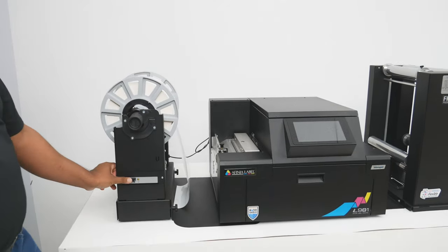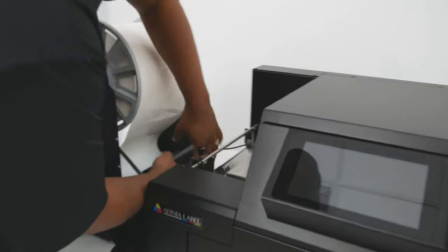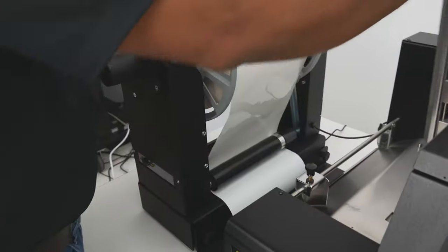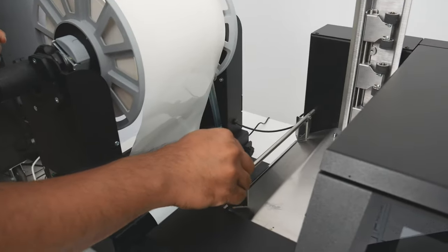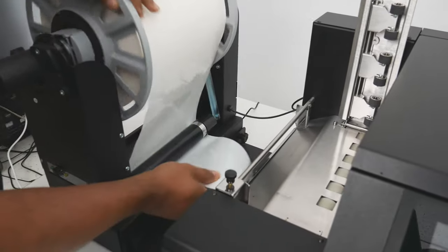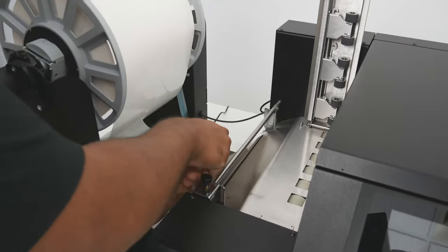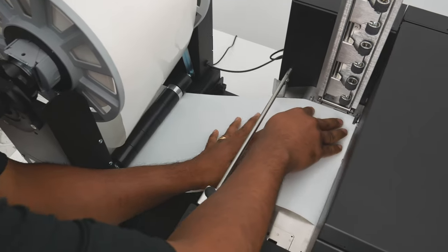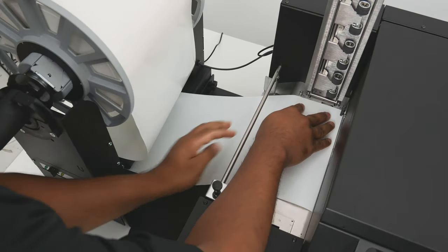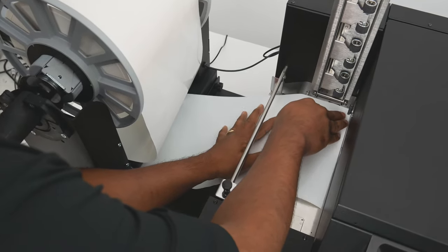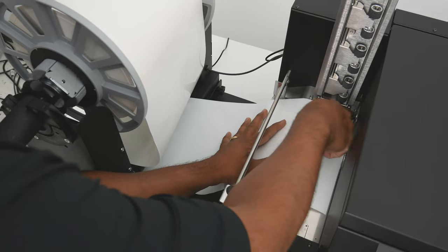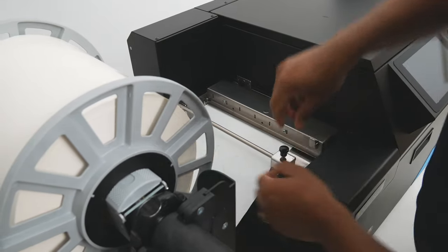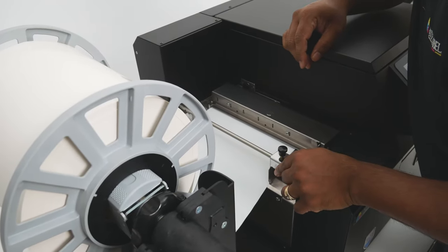With the unwinder switched off, we'll then bring the material under the dancer arm. Flip this roller assembly latch up and out of the way and line it up along the fixed media guide on the far side like so. To make sure the media is properly aligned and will feed straight, you can use the two pins and fixed edge shown here. While holding the media in place, flip down the latch and position the adjustable guide to keep it from moving left to right.